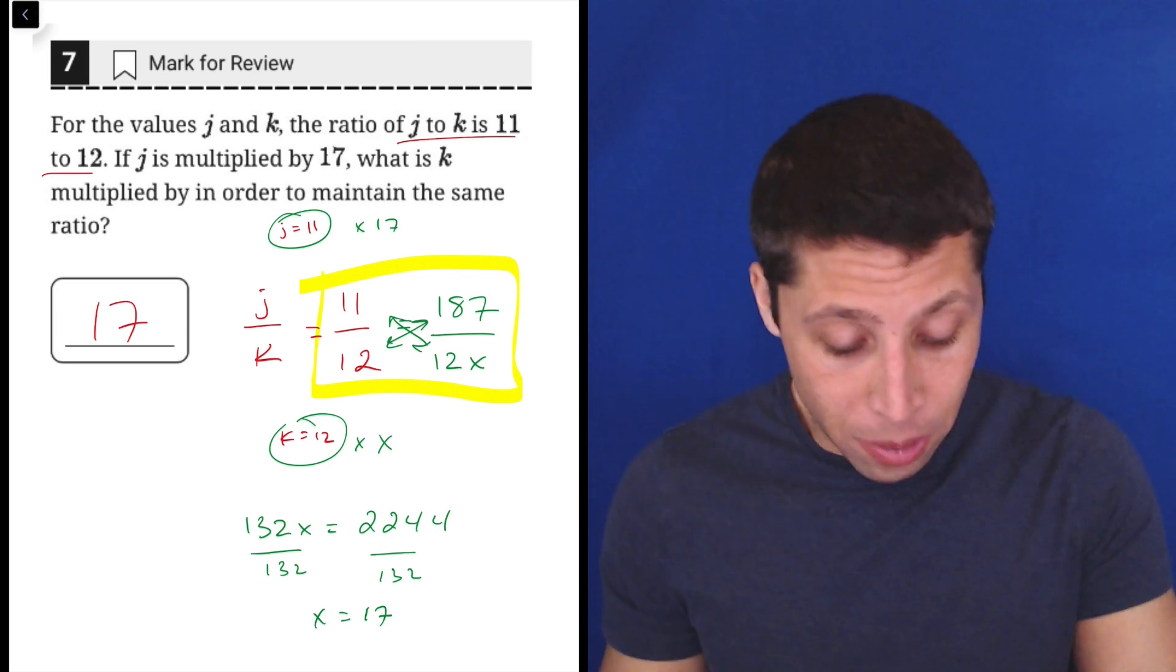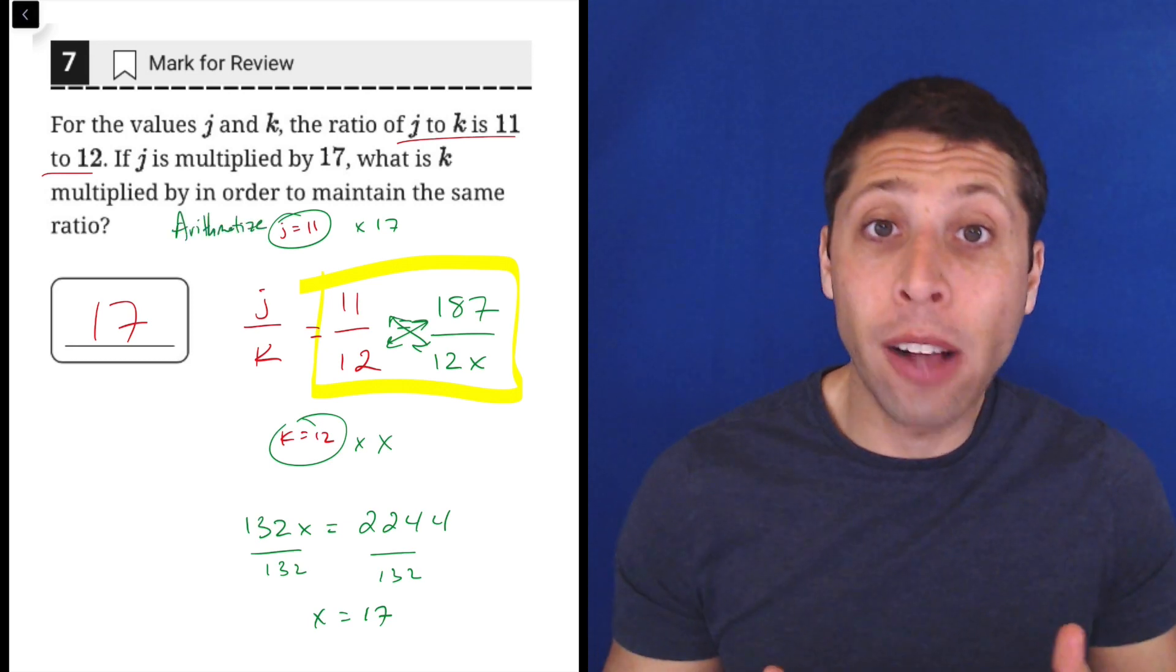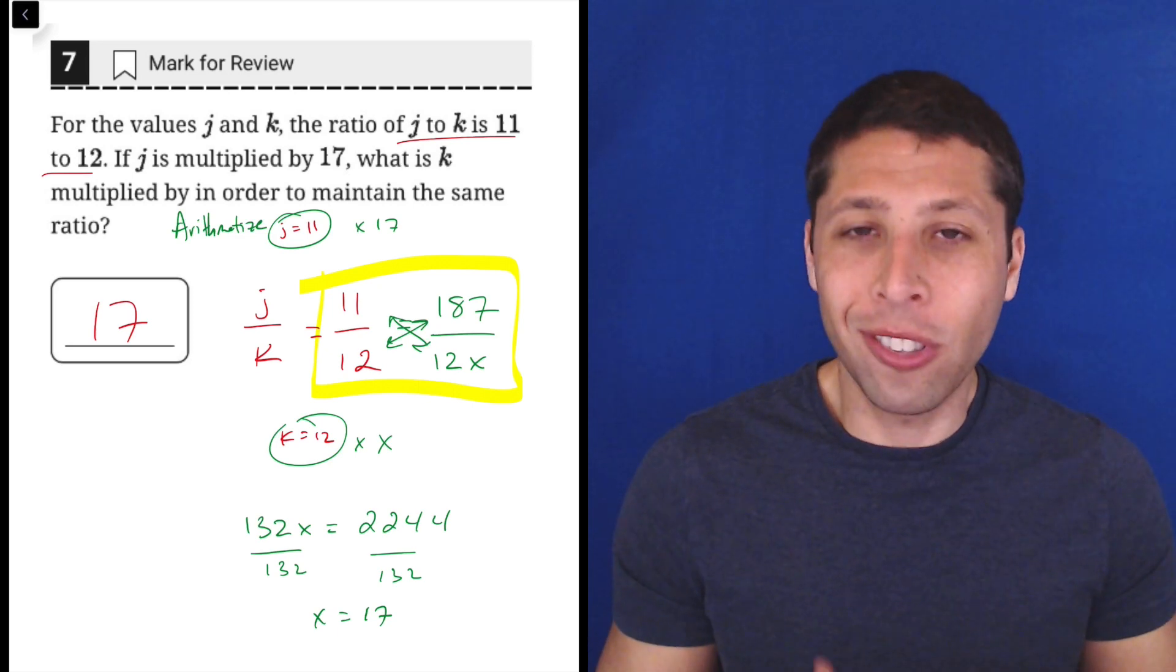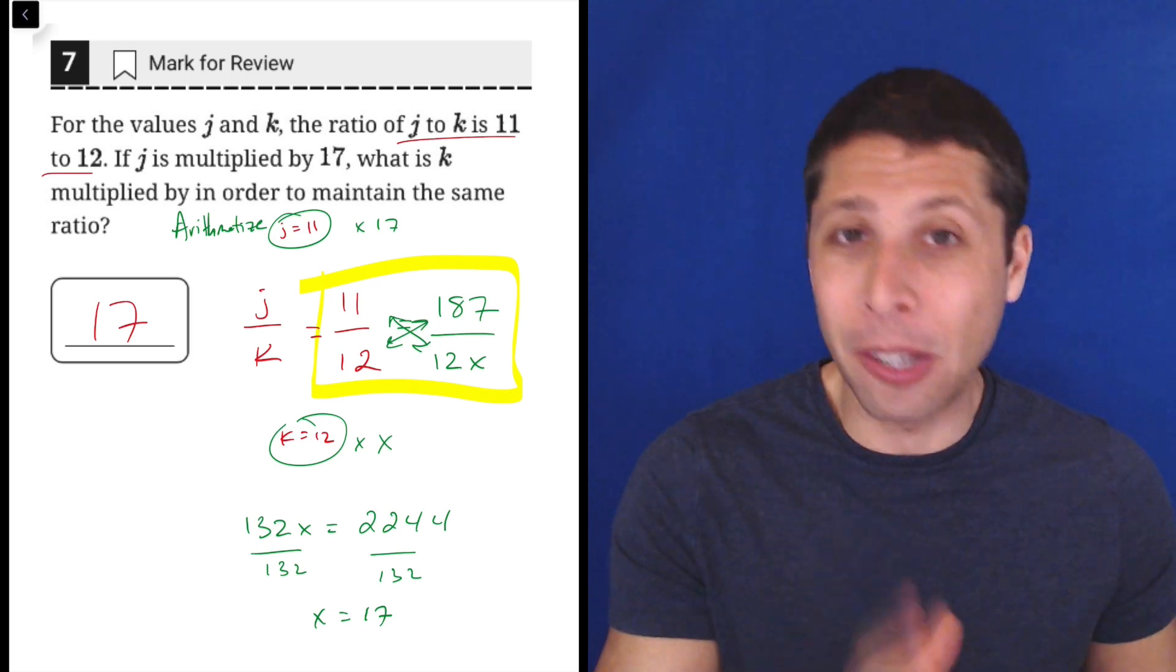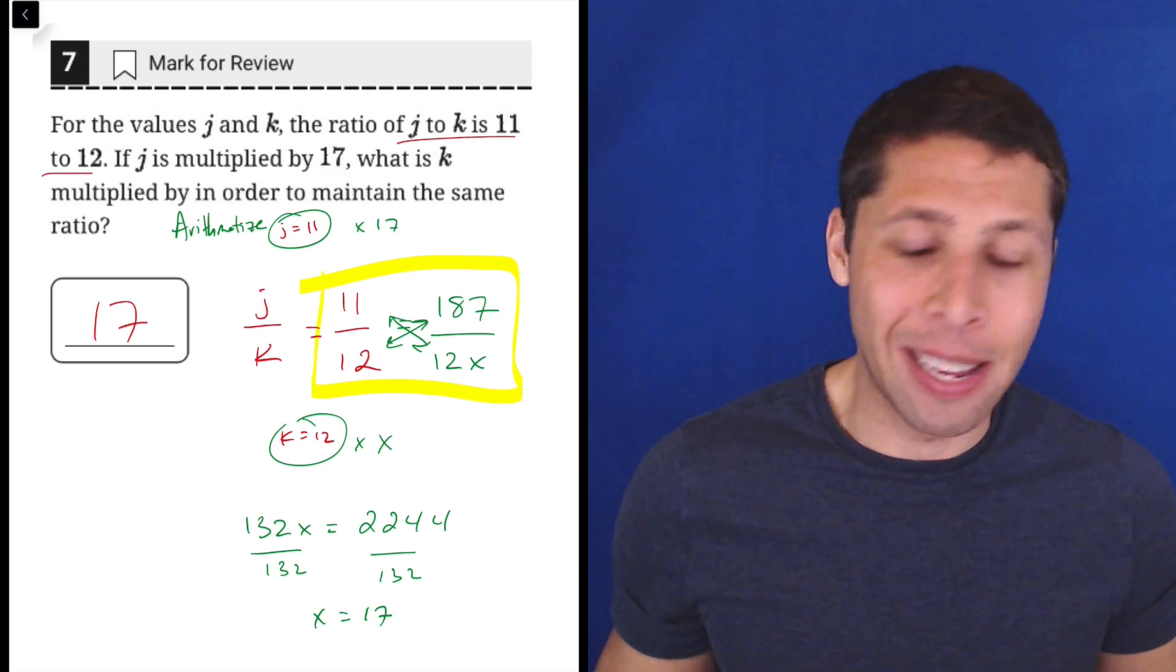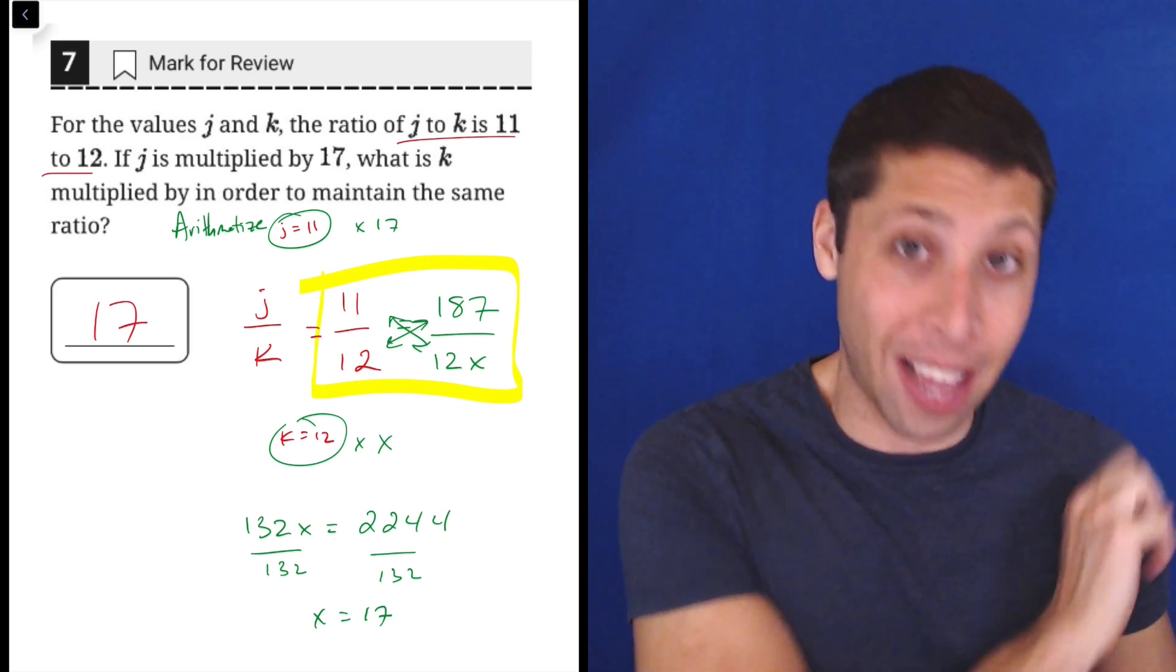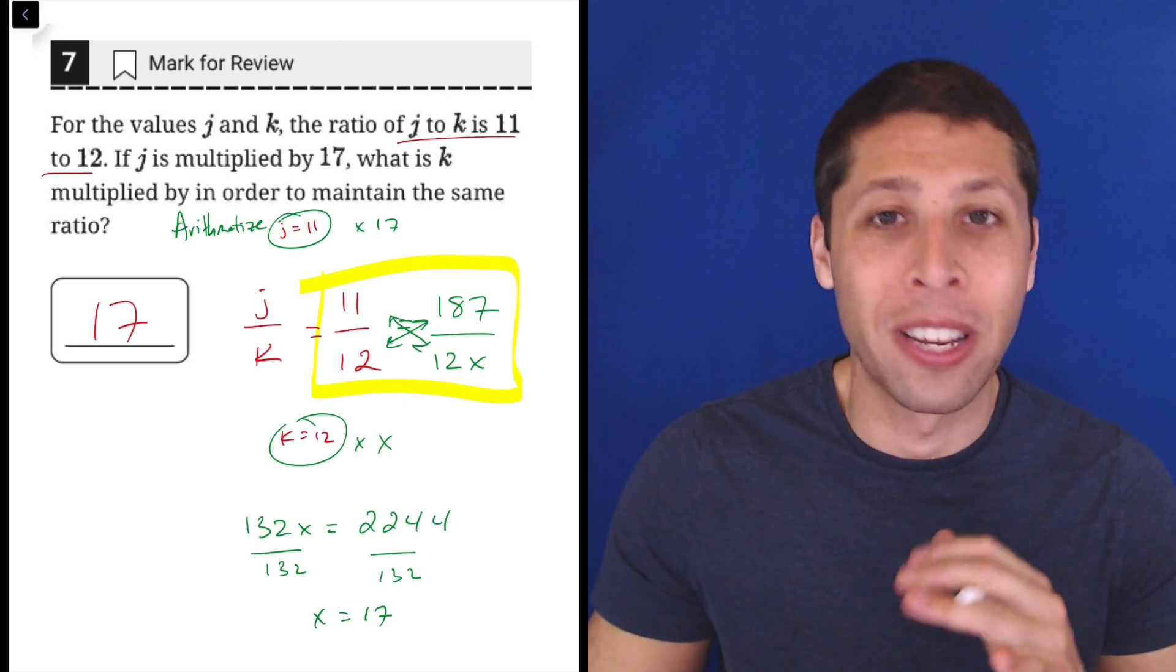But if you don't, notice what we did here is basically the arithmetize strategy to give ourselves some values of J and K that we can actually multiply by 17 so that we can prove it. It's always there in the background if we need to. If we have variables that they're asking us to change, sometimes the best way to just truly be sure is to actually put some numbers into those variables and then change those numbers according to the rules. It may be more tedious, but it might just save you the points. And that might be better than risking the points here and then having trouble with harder questions later. You do want to get as many points in the early parts of the modules as possible.